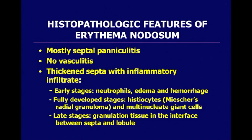Summary of pathologic features of erythema nodosum: it's a mostly septal paniculitis with no vasculitis. The most important features are in the septa — thick septa with inflammatory infiltrate whose composition is variable according to time of evolution. In early stages there are neutrophils, with thickness mostly due to edema and hemorrhage. In fully developed lesions, the Miescher's radial granuloma is easy to see and is very specific for erythema nodosum. In later-stage lesions, you see granulation tissue in the interface between the septa and the fat lobule.